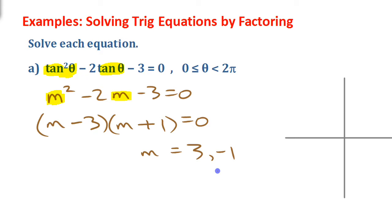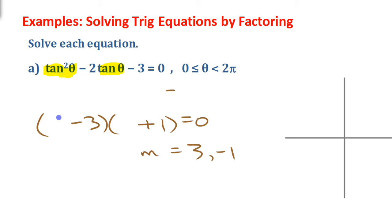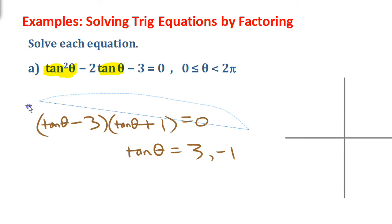Since we're looking at something that says tan theta squared, instead of m minus 3 and m plus 1, this is going to say (tan theta minus 3) and (tan theta plus 1). And then in the end, we're going to have tan theta equals 3 or tan theta equals negative 1. It's exactly the same process.